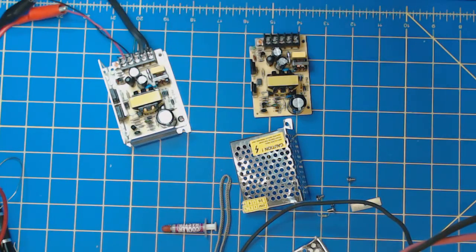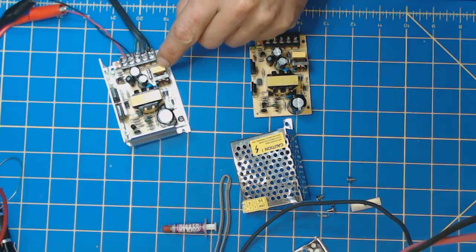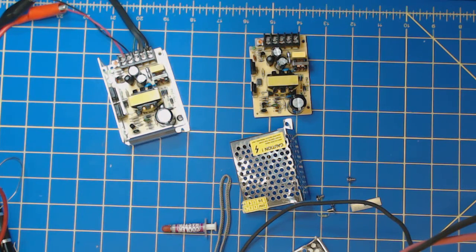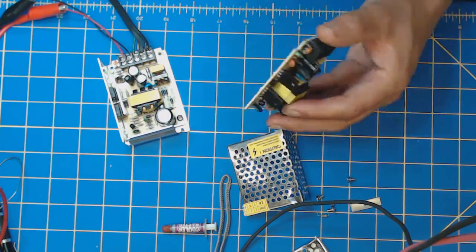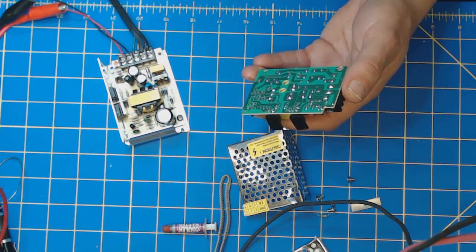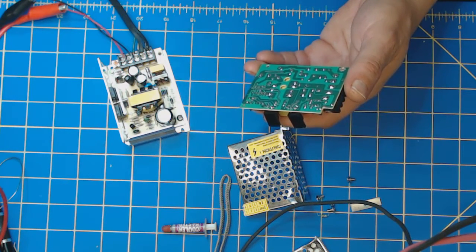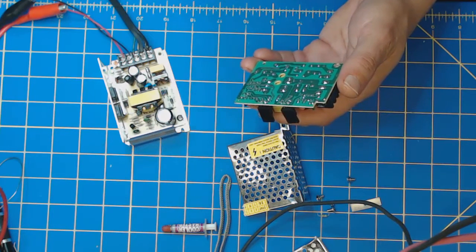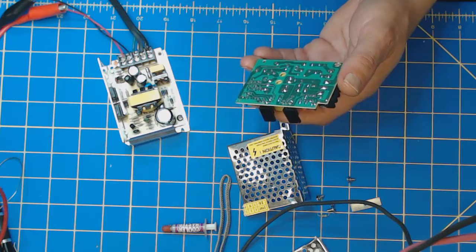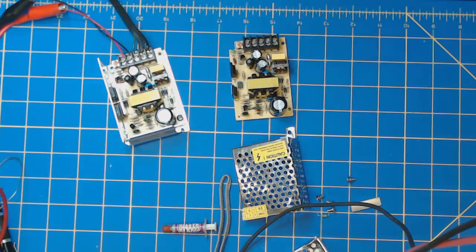It does have a class XY capacitor and a common mode choke on the input, so it's definitely not scraping the bottom of the barrel from a switching power supply standpoint, especially when you consider that I bought these during the 10th anniversary sale and they were $3.99. The fan you just heard kick on is the constant current load on this power supply, so I'll wind that down a little bit.